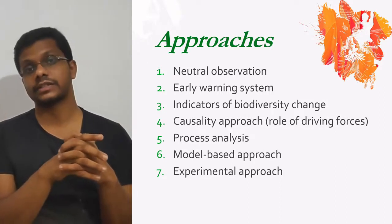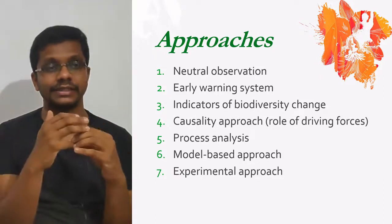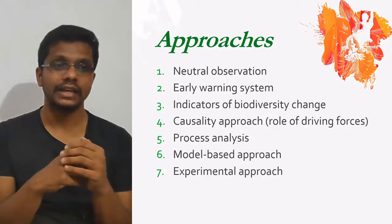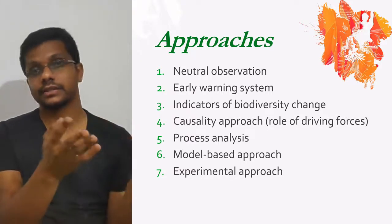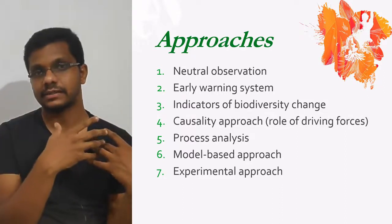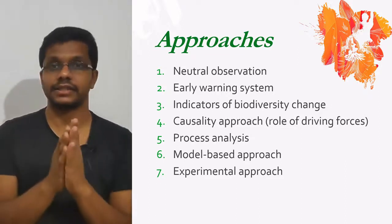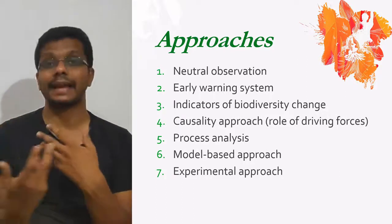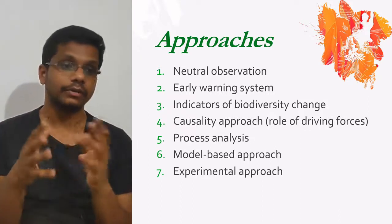Finally, we have experimental approaches in which we are using controlled experiments to study changes in biodiversity. So these approaches are a little bit different from each other. Natural observation is just observing without a strict statistical basis. The early warning system is used for conservation approaches for particular species. The indicator approach studies biodiversity using indicator organisms instead of studying all biodiversity. The casualty approach is based on driving forces. Process analysis studies the mechanism of loss of biodiversity. We can also make computerized or mathematical models, or go for experimental approaches.